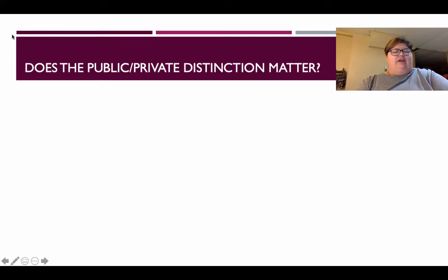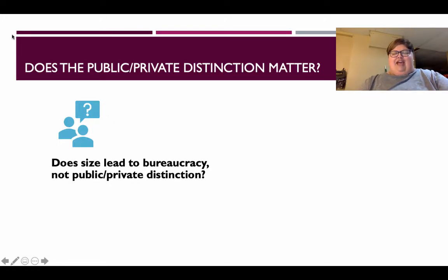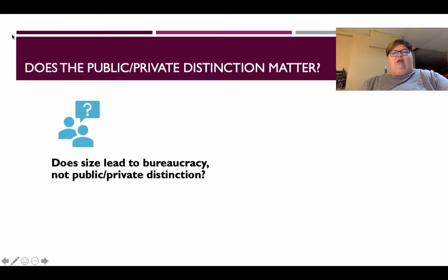We need to confront the question of whether the public-private distinction actually matters at all. People tend to cling to the idea that public institutions have overgrown, thorny bureaucracies — think of the term red tape — and that this does not happen in private enterprises. But if you've worked for a large corporation like General Motors or IBM, you know that's not the case. Size leads to bureaucracy, not whether the organization is public or private.